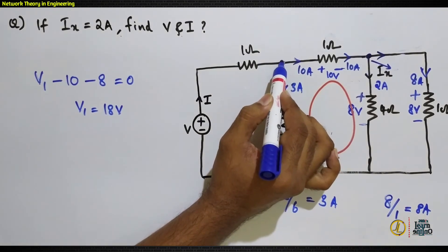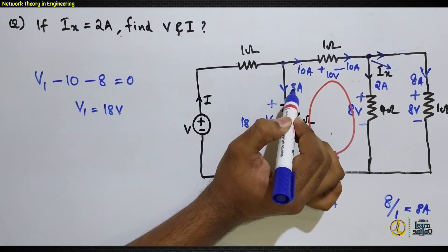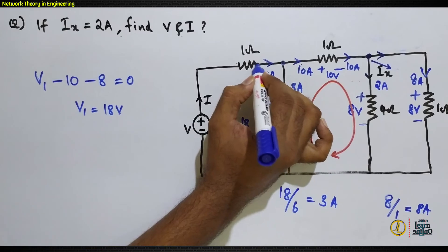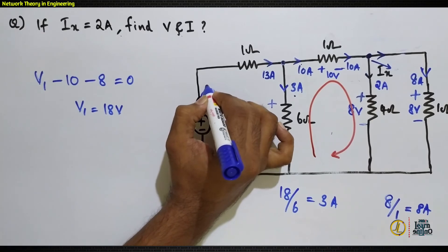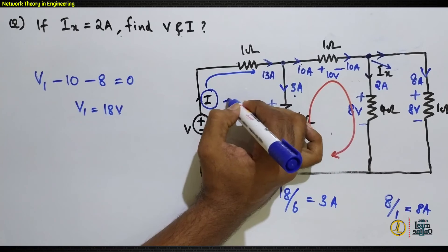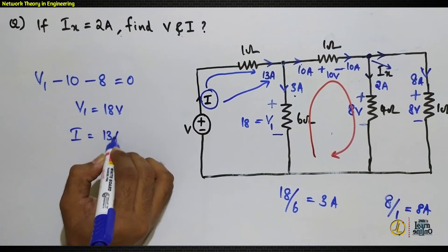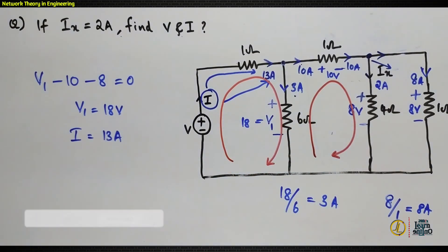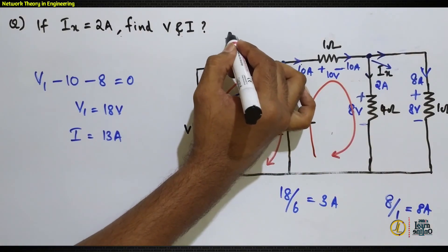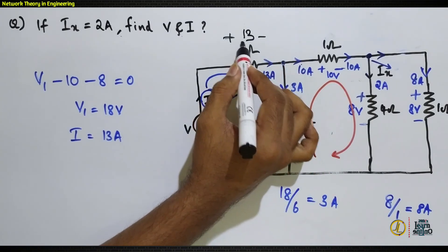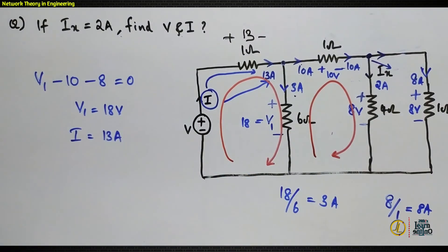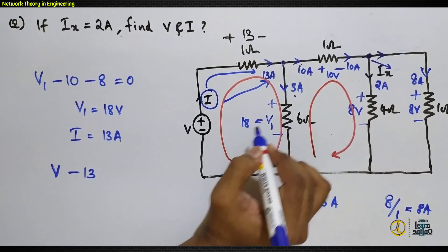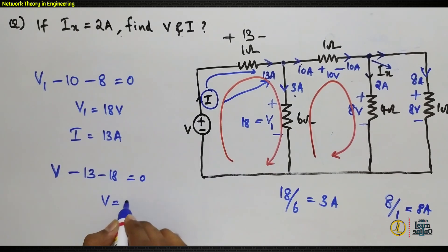Considering the next node: 10A and 3A are both leaving, giving a total of 13A leaving. By KCL, 13A must be entering, so the current i through the input branch is 13A. To find v, write KVL around the outer loop: v − 13 − 18 = 0, giving v = 31V. Therefore, i = 13A and v = 31V.